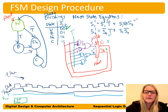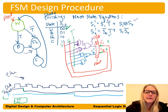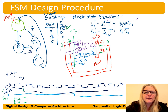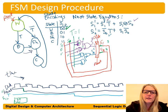With state 00 and T=1: for S1 prime, we get 0_bar AND 1_bar = 1 AND 0 = 0 on that top AND gate. Then S1 XOR S0 = 0 XOR 0 = 0. So 0 OR 0 means S1 prime = 0. For S0 prime, we get 0_bar AND T = 1 AND 1, giving us a 1 through the OR gate. So S0 prime = 1.